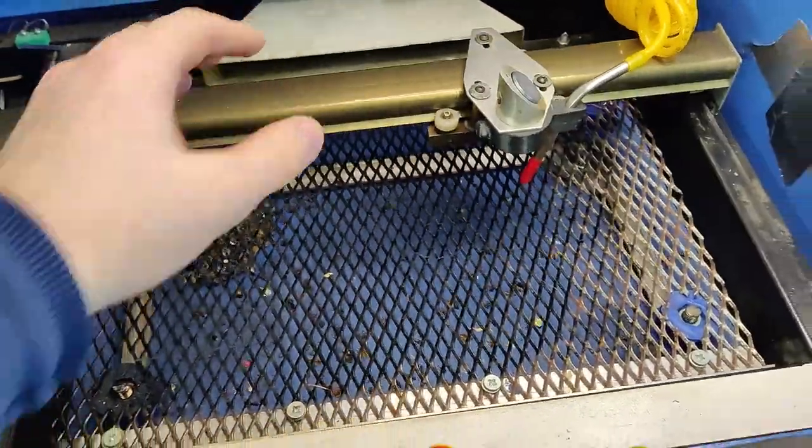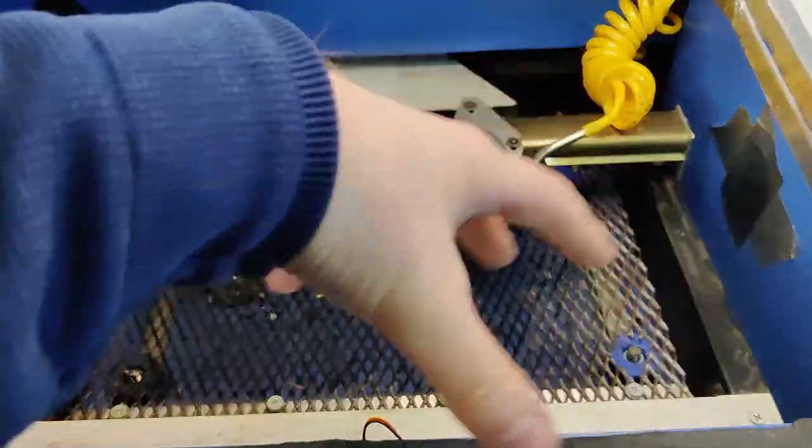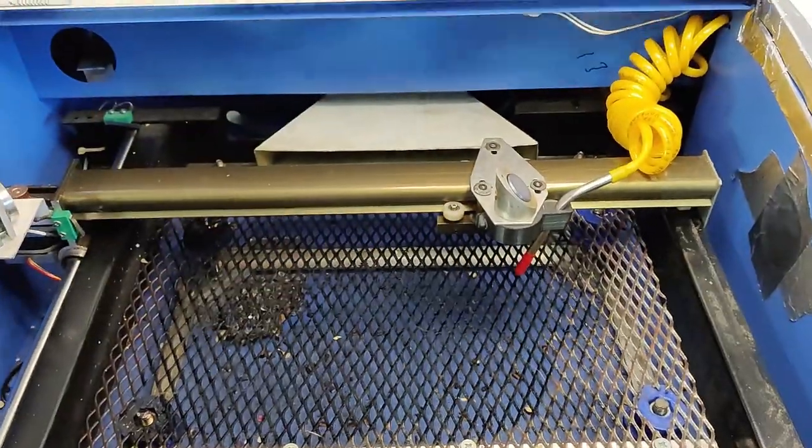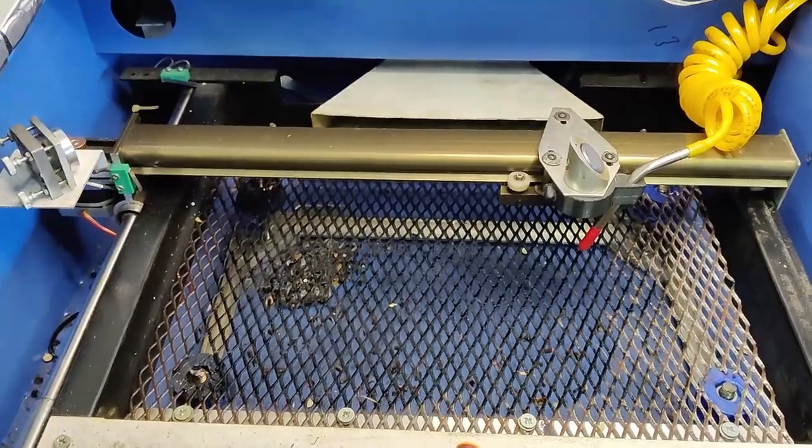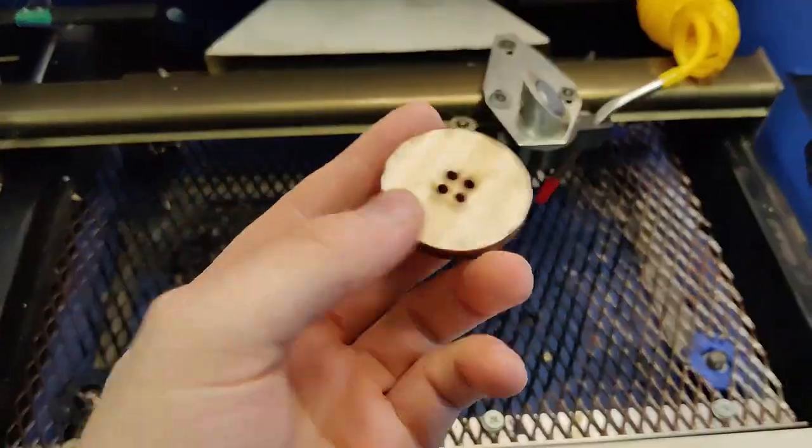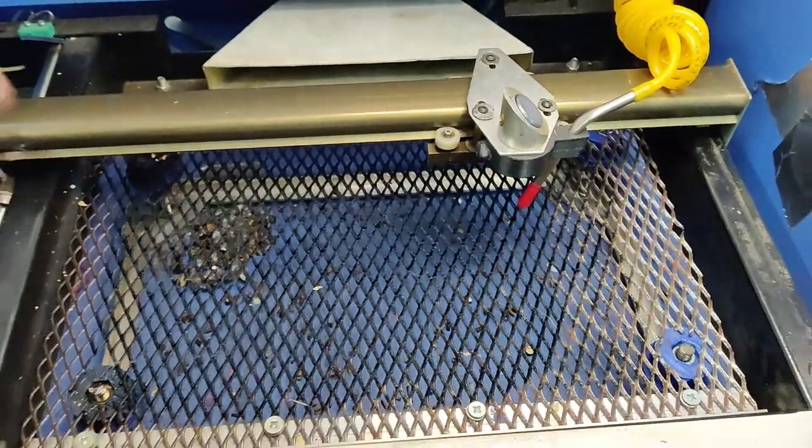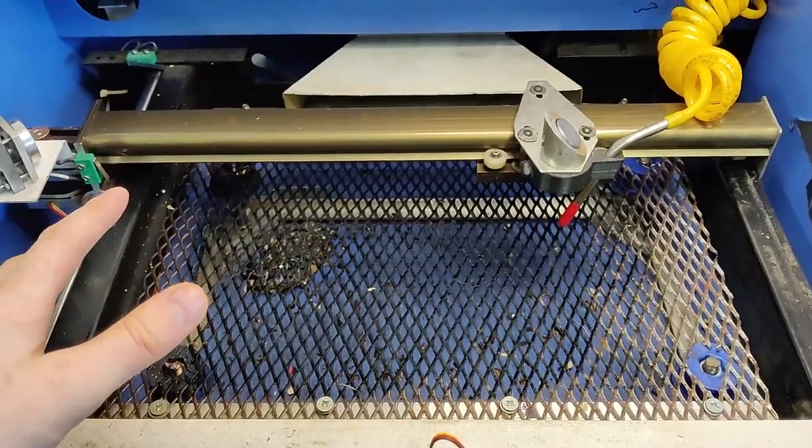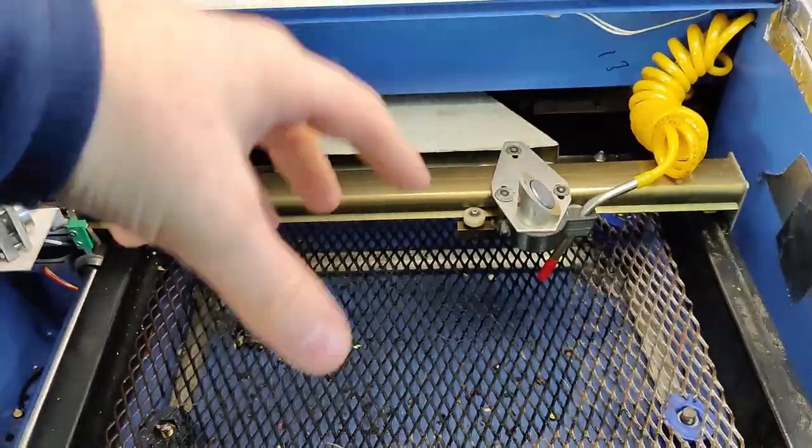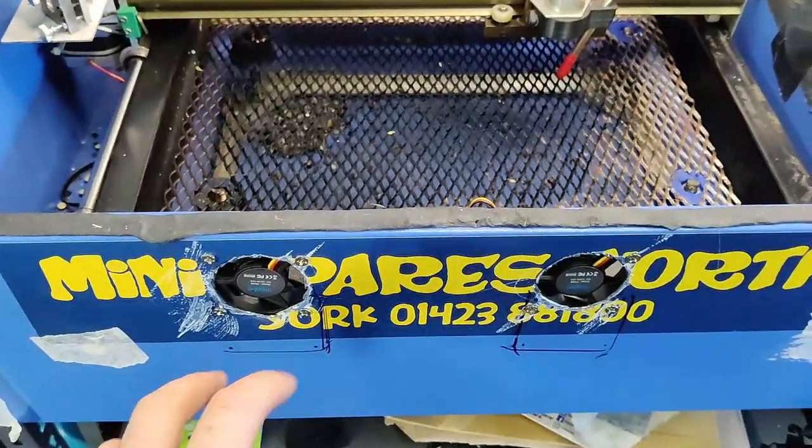That should help reduce smoke in here. It creates a positive pressure which allows the extraction to be a lot more efficient. It also should keep the smoke off the surface of the material. As I was mentioning earlier you get this staining on the material, that constant flow of air should help reduce that because the smoke's not stagnating on the workpiece. That needs to happen, I've started that.